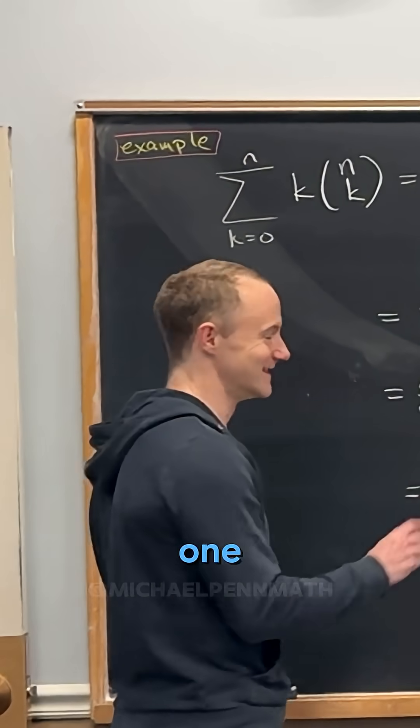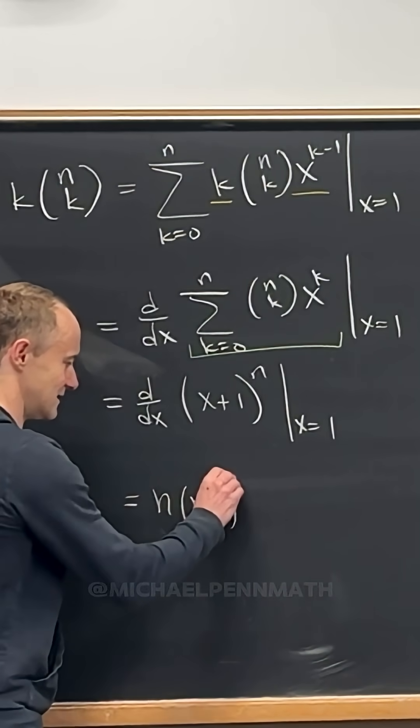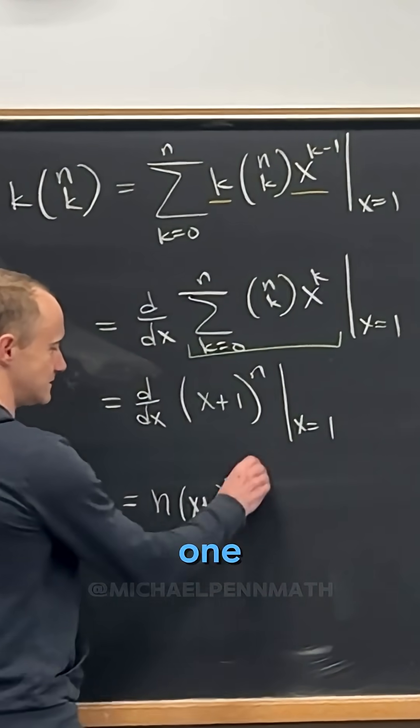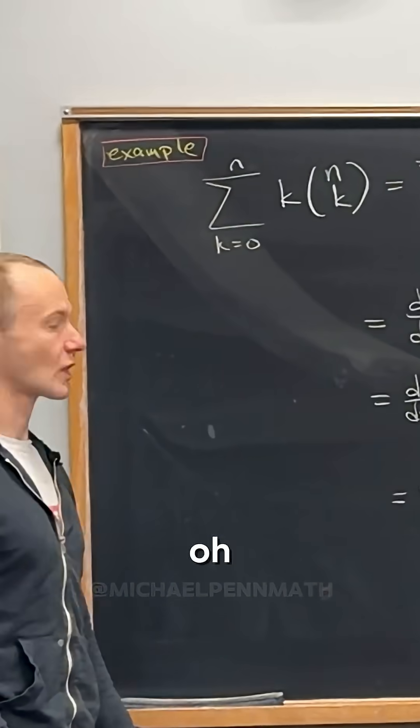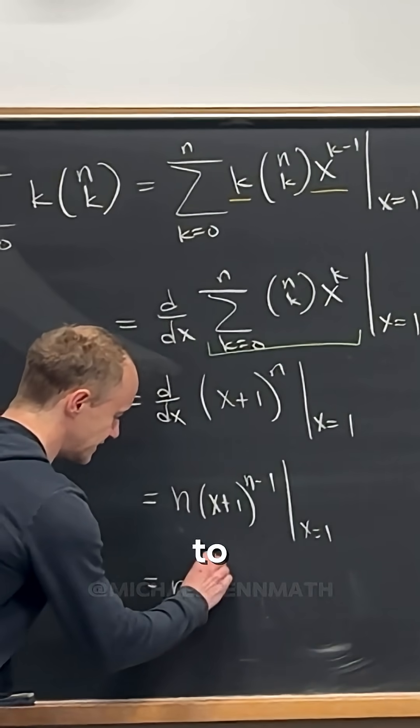n times x plus 1 to the n minus 1 times 1. Now if we evaluate that at 1, we've got it. This is n times 2 to the n minus 1.